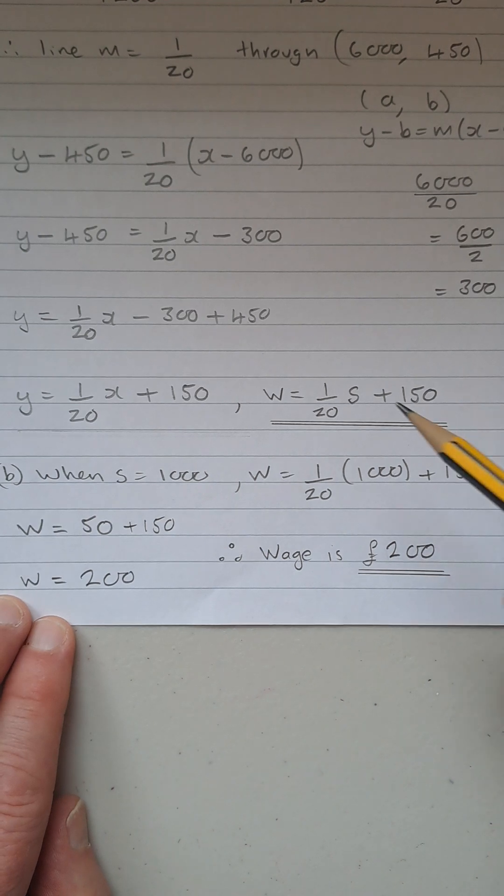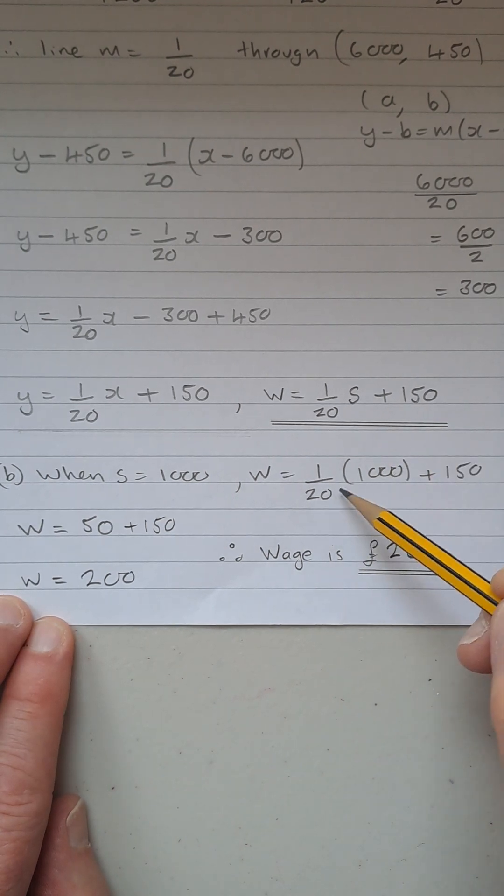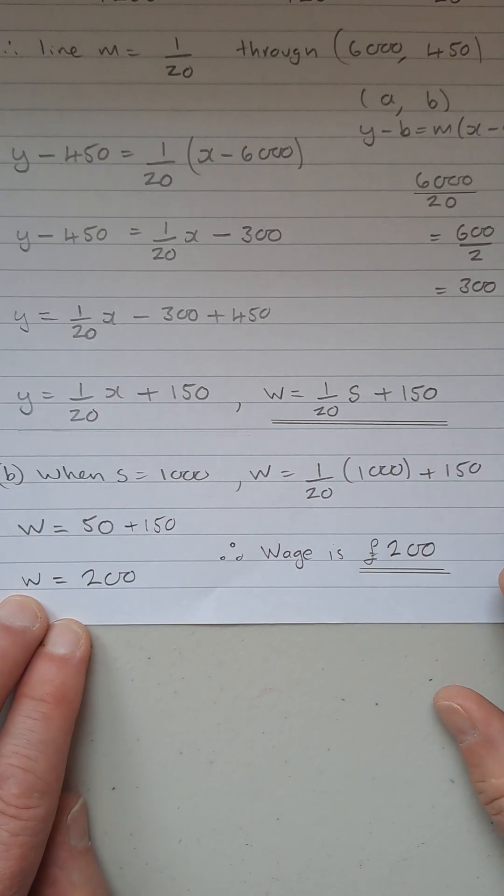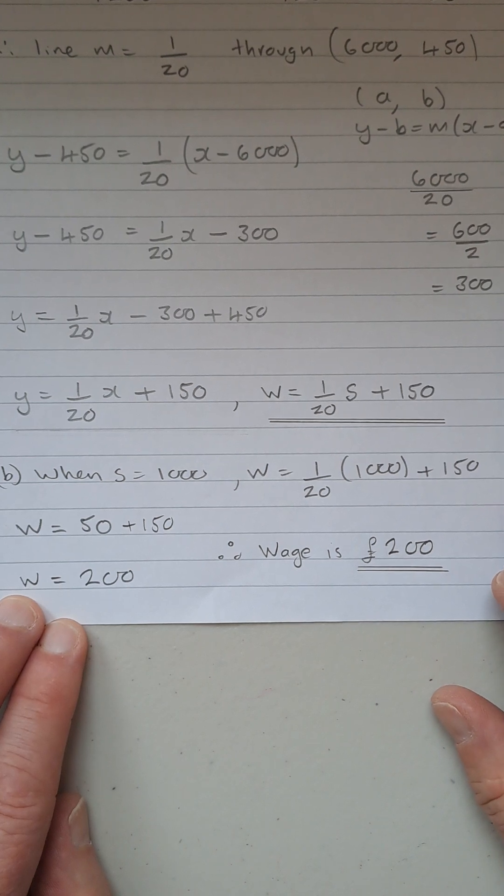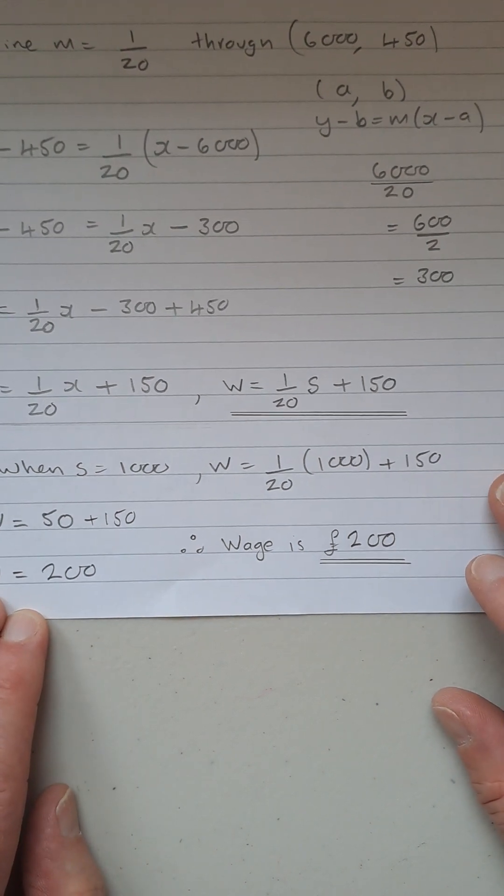So what's 1,000 divided by 20? Well, we can cross off the zeros again. And it's the same as 100 over 2, which is 50 plus 150. That gives you a total of 200 pounds.